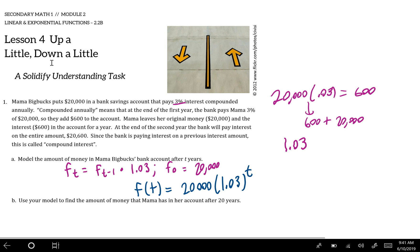And so to find the amount of money that Mama has in her account after twenty years, we're just finding F of twenty. So twenty thousand times 1.03 to the twentieth power, and that comes out to be thirty six thousand one hundred twenty two dollars and twenty two cents. So that's a pretty good return on investment for her.